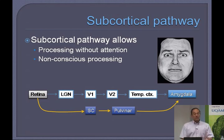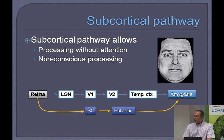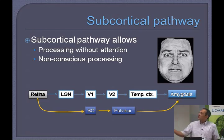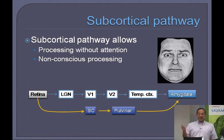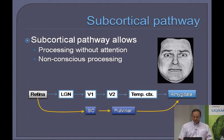The thinking was that this special processing relies on a subcortical pathway — through the superior colliculus and the pulvinar nucleus in the thalamus. The regular pathway goes from the retina to the lateral geniculate nucleus in the thalamus, to primary visual cortex V1, V2, and eventually reaches the amygdala. But the idea is you can bypass this whole pathway subcortically, very fast, processing emotional stimuli independently of attention and non-consciously.